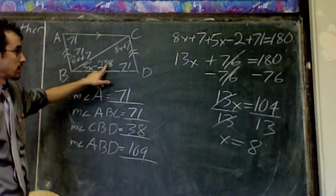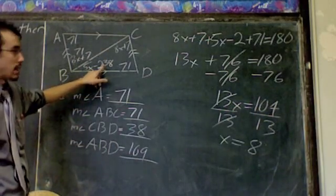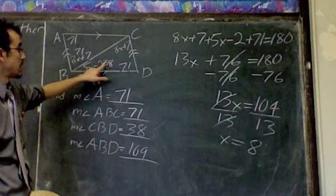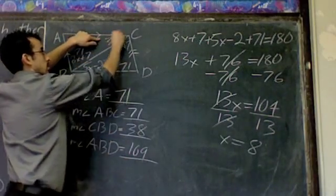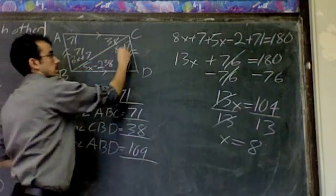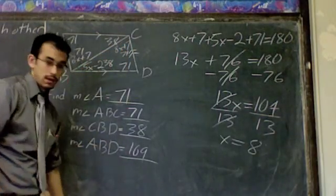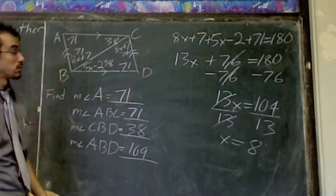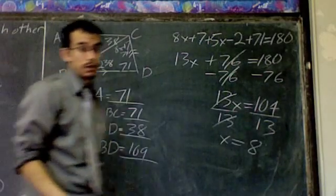And again, if you wanted to fill in the vertical, the other angles, since these triangles are the same, if this is 38, so is this. If this is 71, so is this. That's really all there is to the angles in a parallelogram when you have a diagonal in the middle.